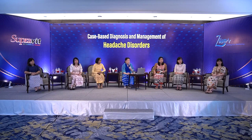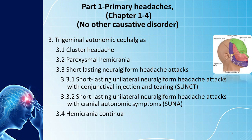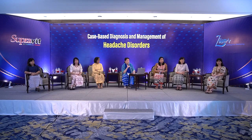Primary headache disorders include migraine — with aura, without aura, and chronic migraine — as well as complications of migraine. Tension headache is also included, as well as trigeminal autonomic headache disorders.